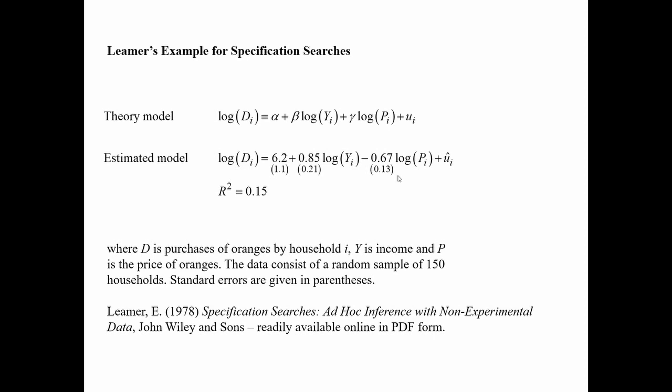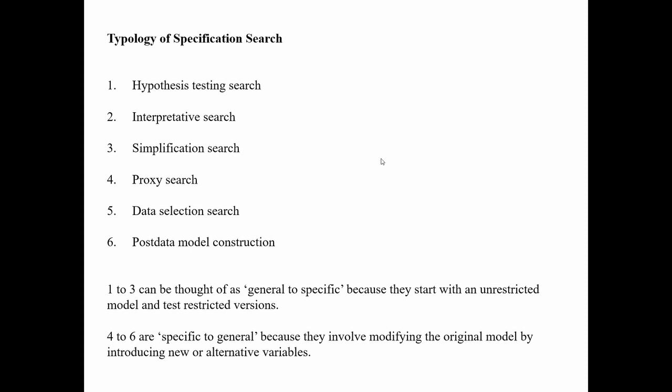He then tries to motivate this by looking at the ways people try to improve and adapt the model, introducing what he calls a typology of specification searches. He divides the things people do to models into six categories: hypothesis testing searches, interpretive search, simplification search, proxy search, data selection search, and post-data model construction. We're going to consider all of these.